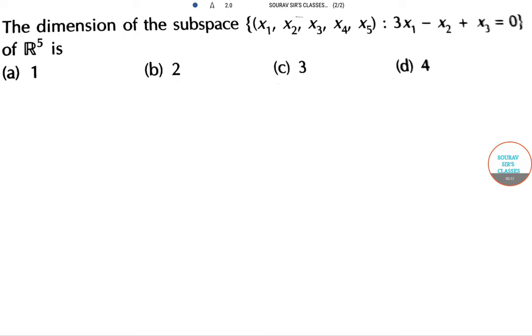The dimension of W can be written as number of variables minus number of restrictions.